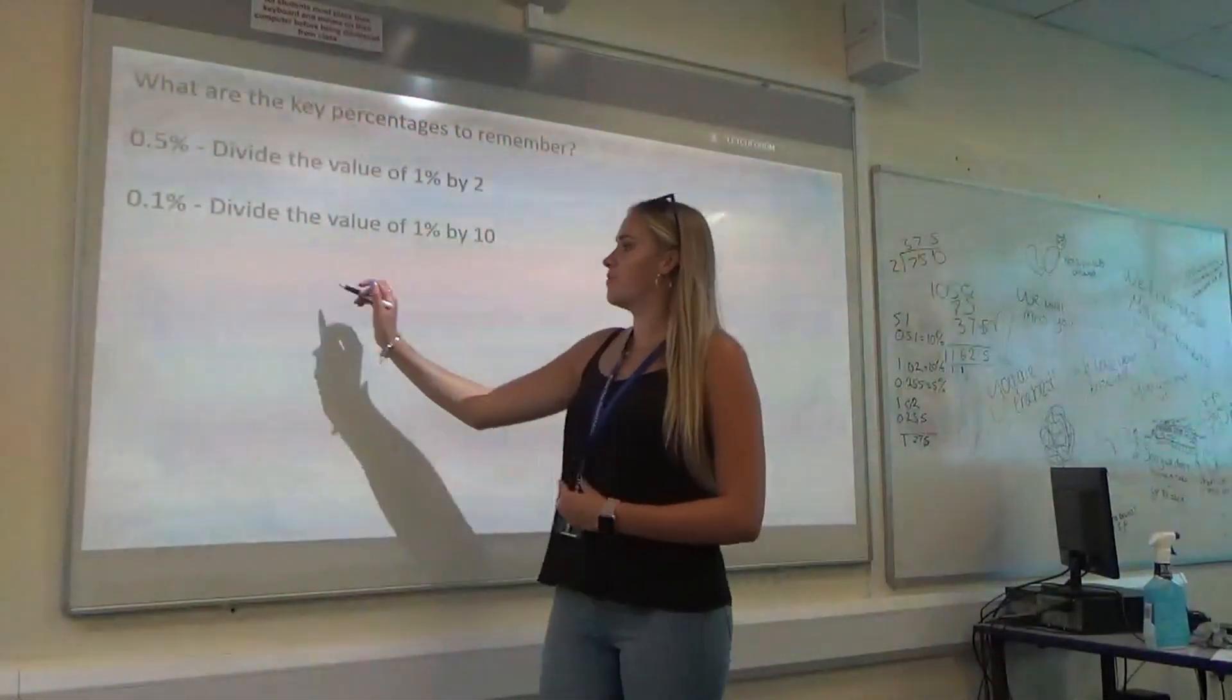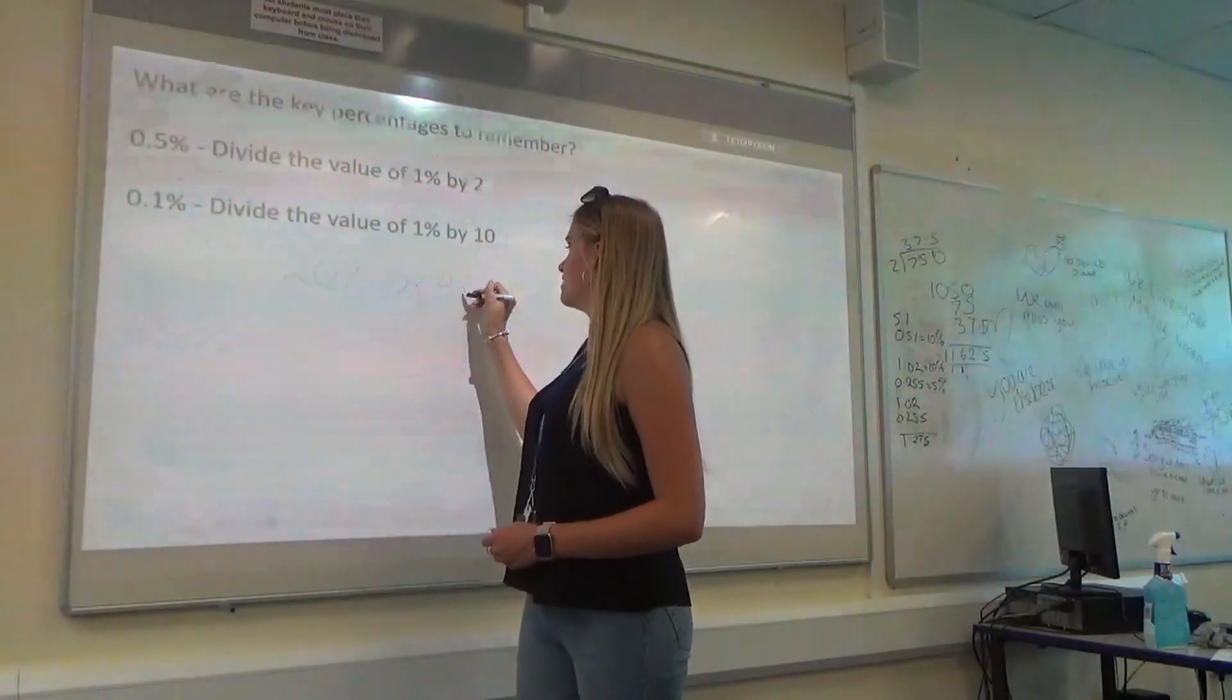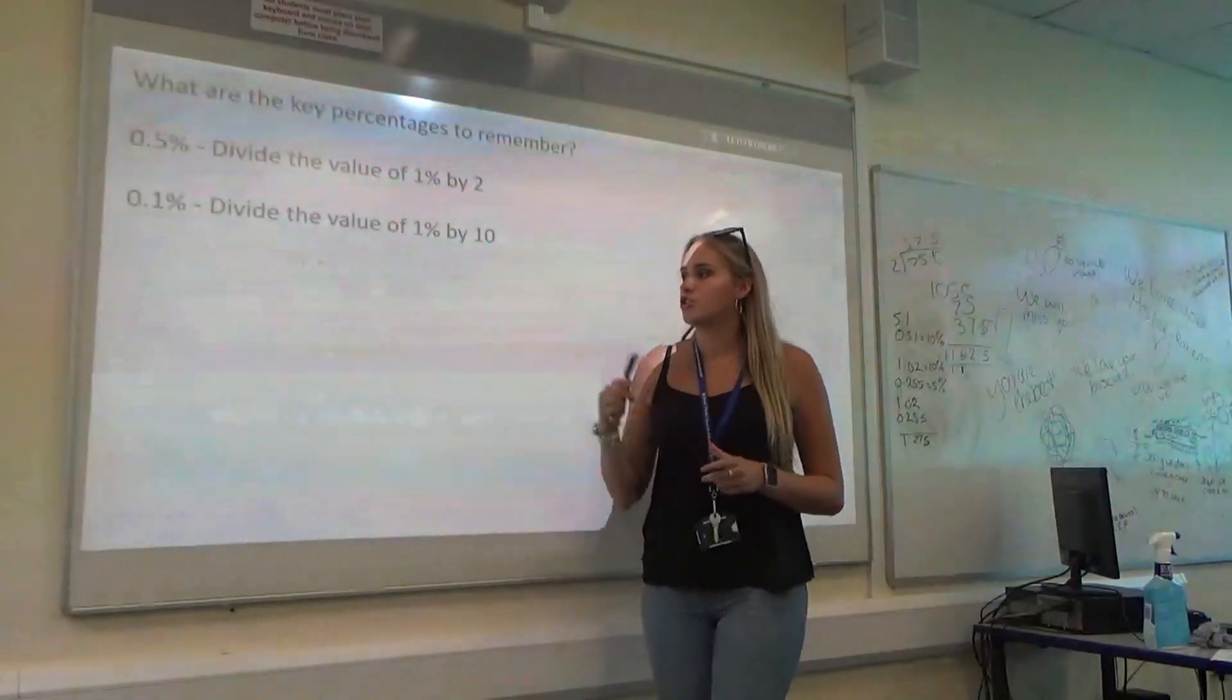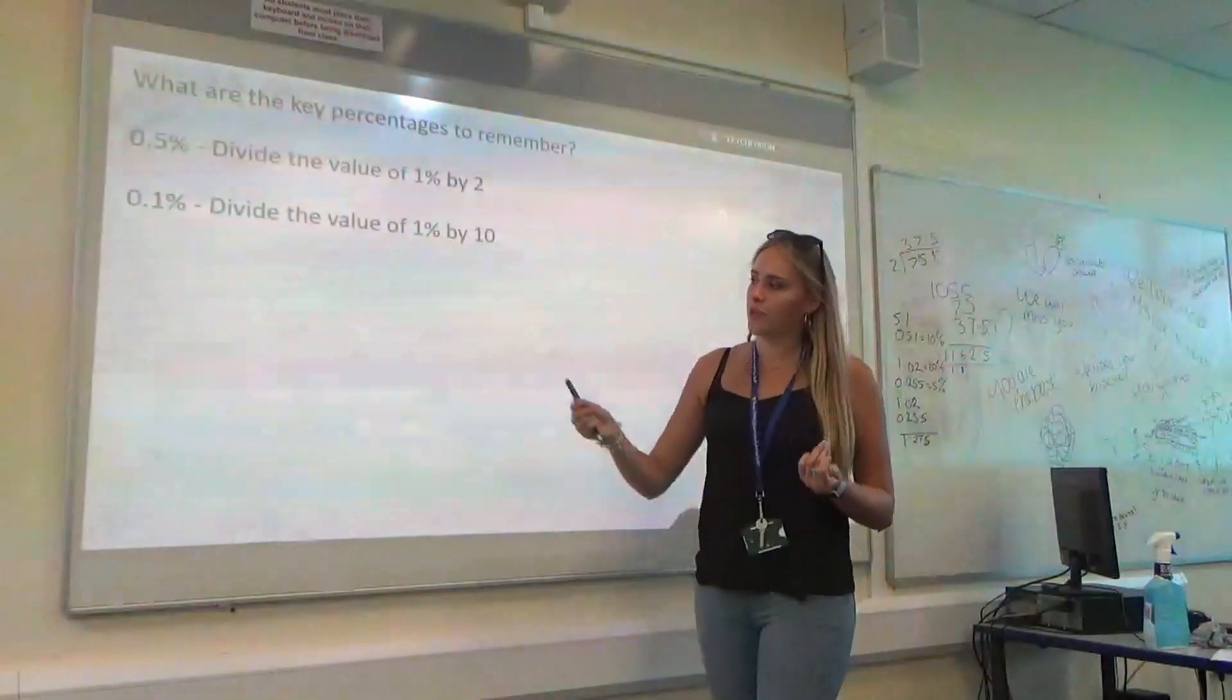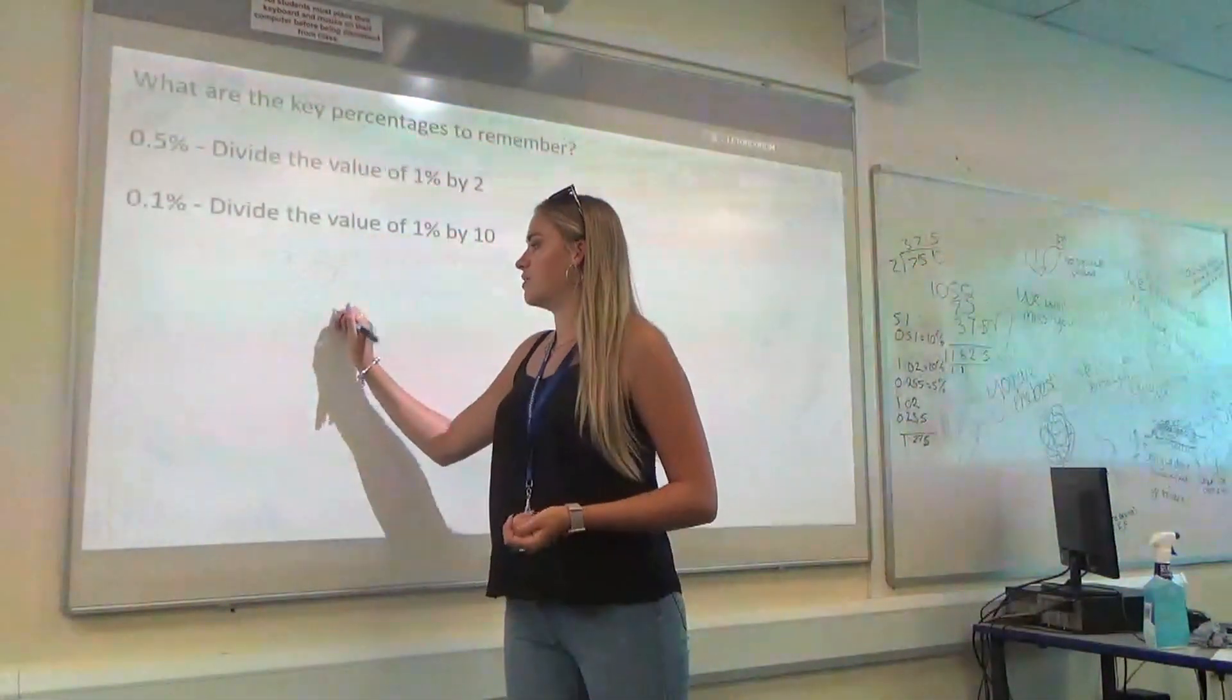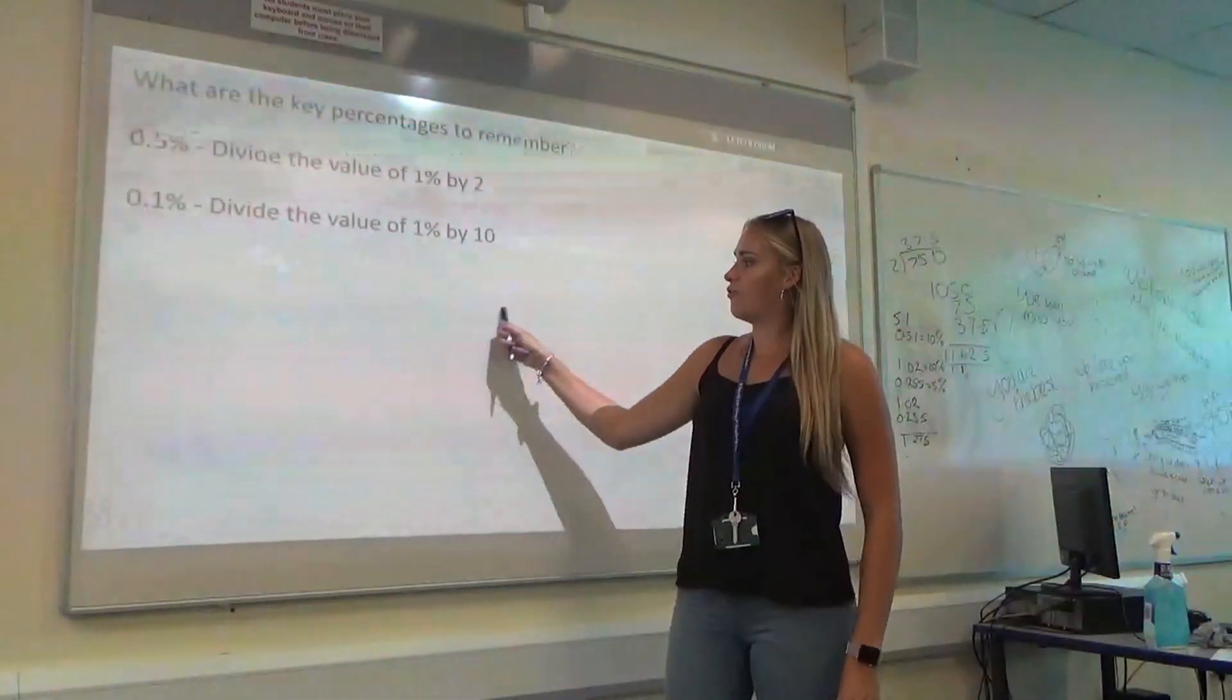And then you'll be able to do them. So, your first example, let's work out 20% of 45. Okay? 20% of 45. We don't know how to get 20% straight away. So, we're going to use our key one. We're going to find 10% first. I know that 10% of 45, I need to divide by 10.